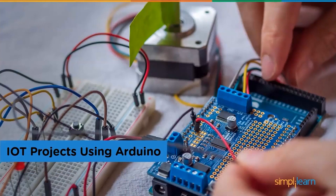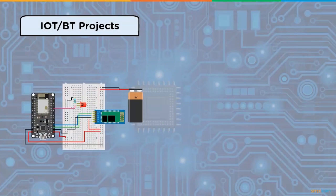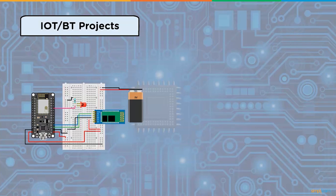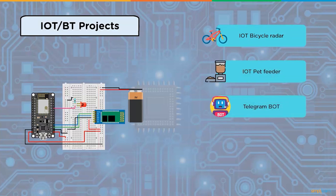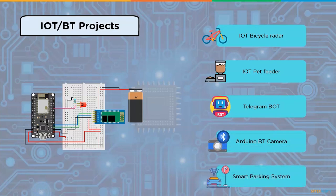IoT projects using Arduino: IoT Cloud is a tool that allows creators to create connected products quickly, easily, and securely. Multiple devices can be linked and data exchanged in real time. Some IoT and Bluetooth projects using Arduino are IoT bicycle radar, IoT pet feeder, Telegram bot, Arduino Bluetooth camera, and smart parking system.